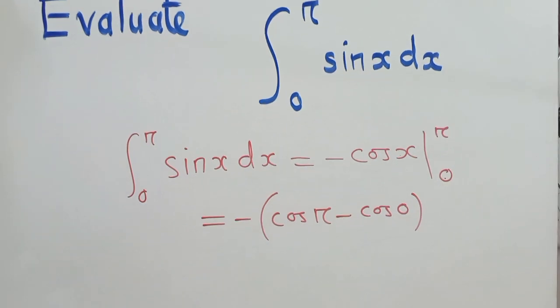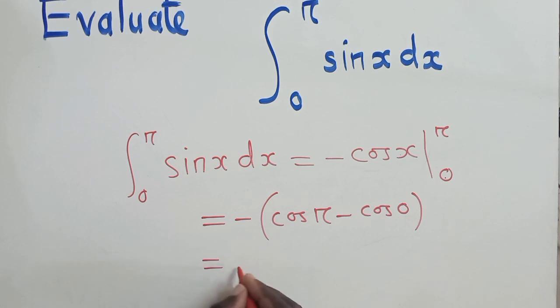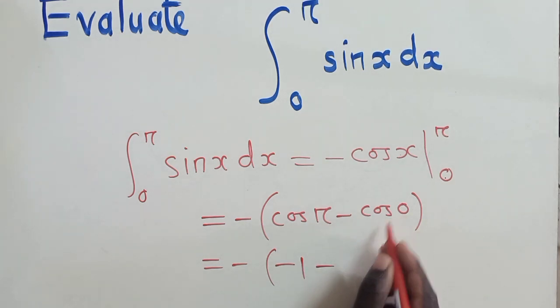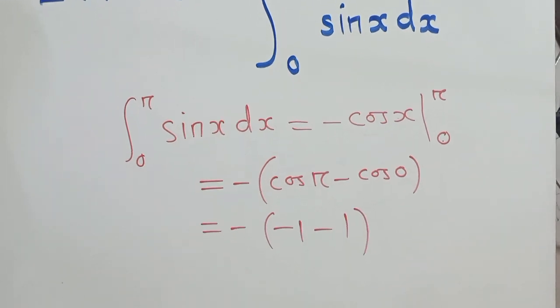Now from this stage, when you find the cos pi, you find that it will give you negative 1, and minus cos 0 is equal to 1. So we are now almost concluding.